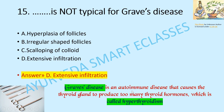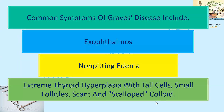Graves' disease is an autoimmune disease that causes the thyroid gland to produce too many thyroid hormones — that is, hyperthyroidism. Common symptoms include exophthalmos and non-pitting edema. Microscopically, there is extreme thyroid hyperplasia with tall cells, small follicles, and scalloped colloid.